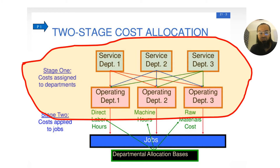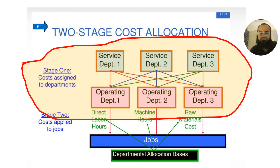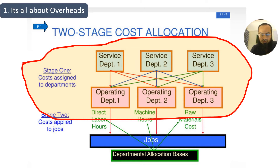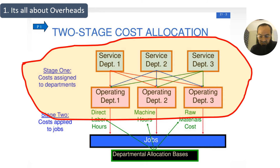It is not necessary that cost is always allocated from service department to production department. Sometimes cost is also allocated from one service department to another service department. In cost center accounting, the cost allocations part only covers stage one allocations — the allocation of cost among different departments. Also note that this is all about overhead costs. We are not talking about direct material cost or direct labor cost; those are covered in product cost controlling. Here we are only talking about overhead cost, and this can include non-manufacturing overheads as well.